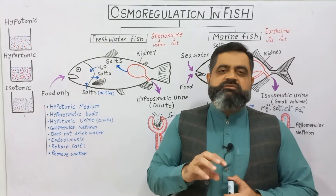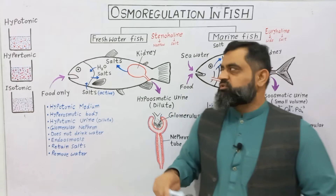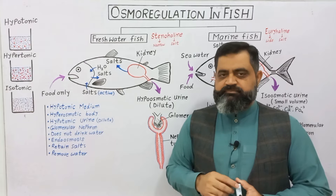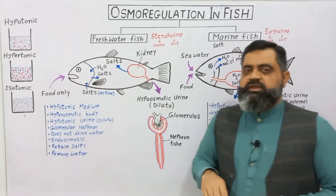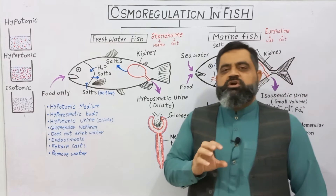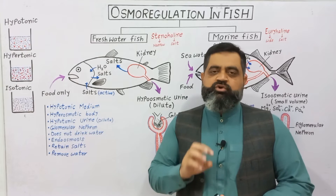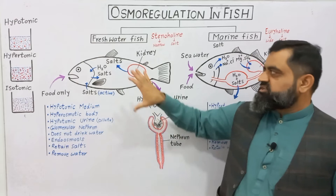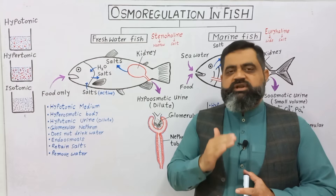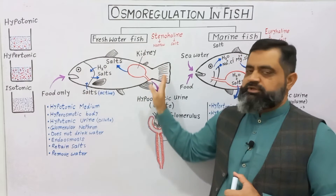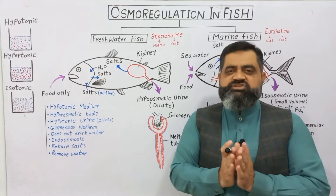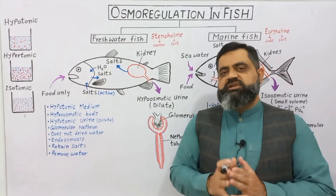Now let's move on to fishes which live in fresh water. Fresh water includes lakes, ponds, rivers, canals, etc. This water is hypotonic and also known as stenohaline — steno means narrow, haline means salt — because this water contains very little amount of salts. Fish living in fresh water face problems because water tends to move inside their body cells, causing their body cells to gain a lot of water, which can lead to bursting and death.